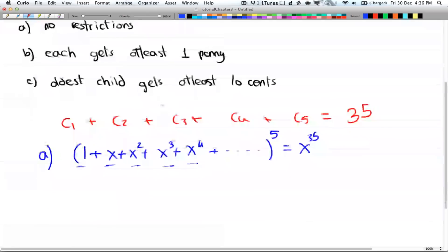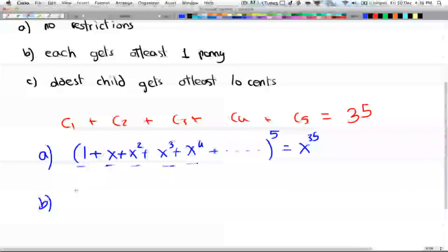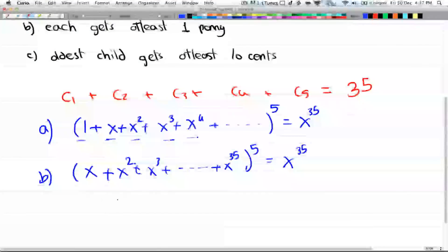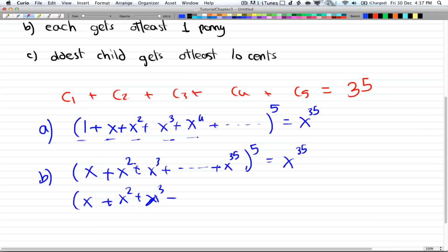Alright, so part B is each child gets at least 1 penny. So you have x, that will be 1 penny, plus x² + x³, all the way to x to the power of 35. And that will be to the power of 5. Okay, and you can actually write this in power series. So x² + x³, all the way to infinity. So that's the difference. Here you have a polynomial. So this part here, polynomial. But the lower part here is a power series. And the power series goes up to infinity.